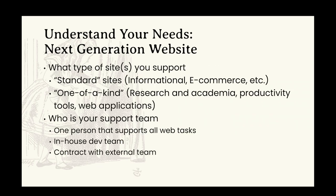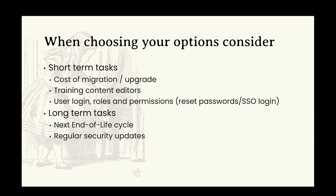The second part is: what are you looking at with your next-generation website? Key questions we always ask: is it a standard site, very similar to many others, or is it one of a kind? In research and academia, we often build very unique sites, and whatever we build, we can't spread the cost over many sites — this defines how we plan the features and costs. Another important thing: you need to know who is your support team. Do you have an in-house team of developers? Are you working with an agency that migrates the site and leaves? Or do you only have a one-person team, which is very common in non-profits, where one person deals with everything related to the web. When choosing migration options, consider both short-term and long-term tasks.